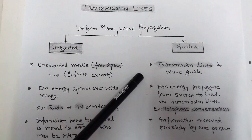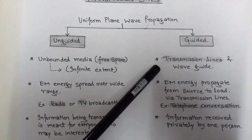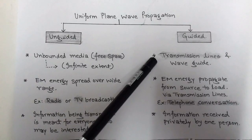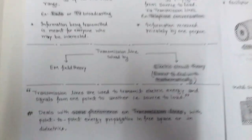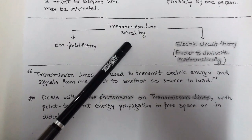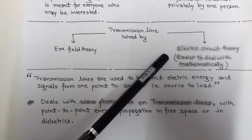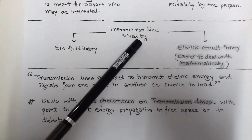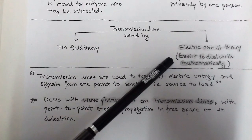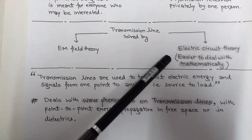Transmission lines fall under the category of guided propagation of electromagnetic waves. There are many problems related to transmission lines, and these can be solved by two theories: Electromagnetic Field Theory and Electric Circuit Theory. In transmission line problems, we use Electric Circuit Theory because it is easier to deal with mathematically, using KCL and KVL.